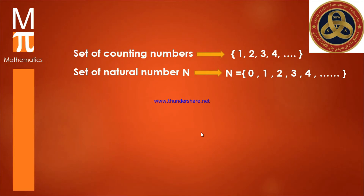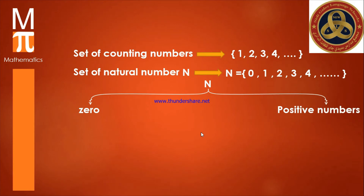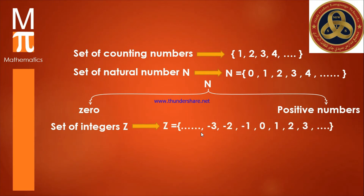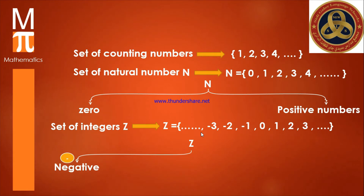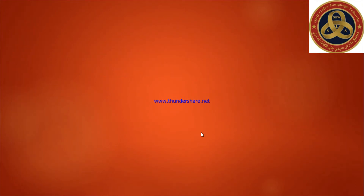So N is zero and the whole positive numbers. The third set is called the set of integers. The integers are all the whole numbers, which means I have negative whole numbers, zero, and the whole positive numbers. So Z includes negative whole numbers, zero, and positive whole numbers.